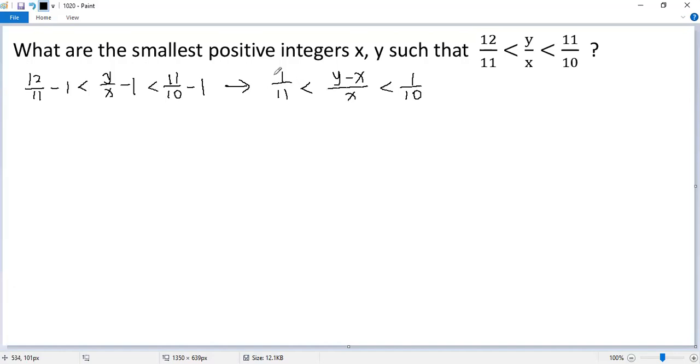Now let's make all the tops as 1. So we can write as 1 over 11 less than 1 over x over y minus x. So there's a main division less than 1 over 10. So the bottom for the middle fraction, x over y minus x, must be greater than 10 but less than 11.